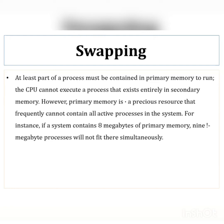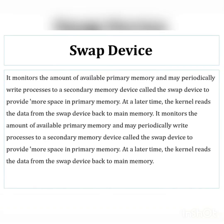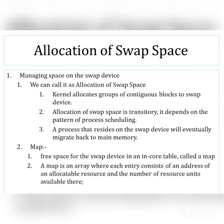To perform all these operations we use the swap device. The swap device monitors the amount of available primary memory and may periodically write a process to a secondary memory device — that is called the swapping device. This swapping device creates more space in primary memory to perform swap-in and swap-out operations.